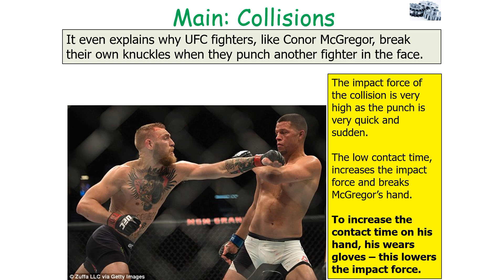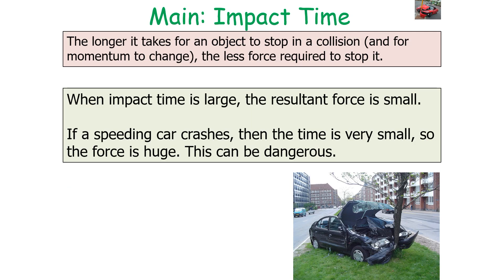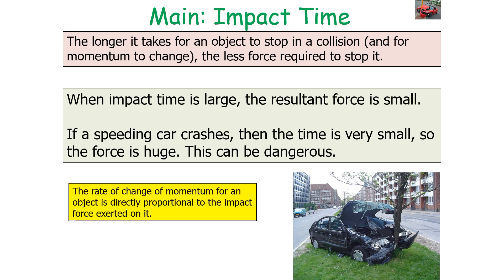To increase the contact time on the hand, they will wear gloves which lowers the impact force. So it's a very fundamental concept in physics that the longer it takes for an object to stop in a collision and for the momentum to change, the less force that's required to stop it. So when the impact time of a collision or event is large, the resulting force acting on the object is small. So if a speeding car crashes, then the time is very small, so therefore the impact force is huge, which can be very dangerous. Because as I've said before, the rate of change of momentum for an object is directly proportional to the impact force exerted on it, which is Newton's second law of motion.